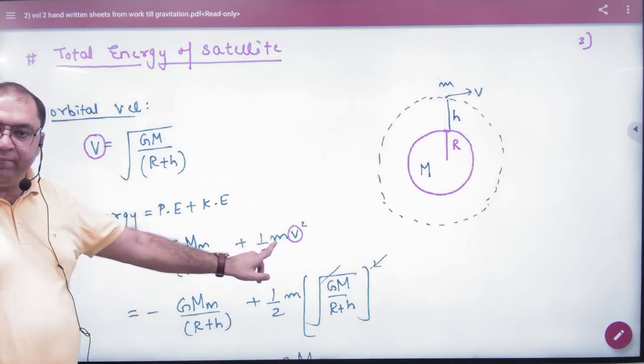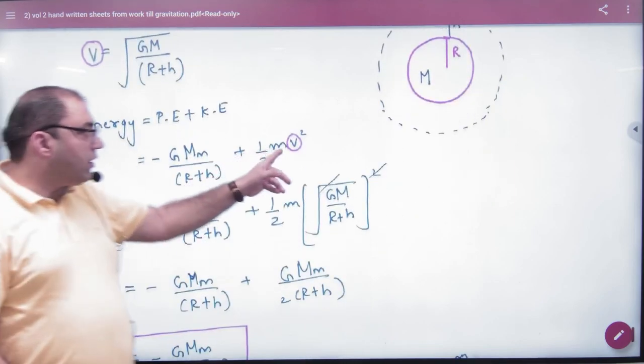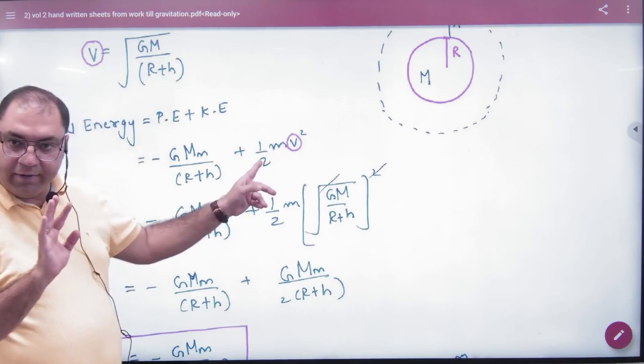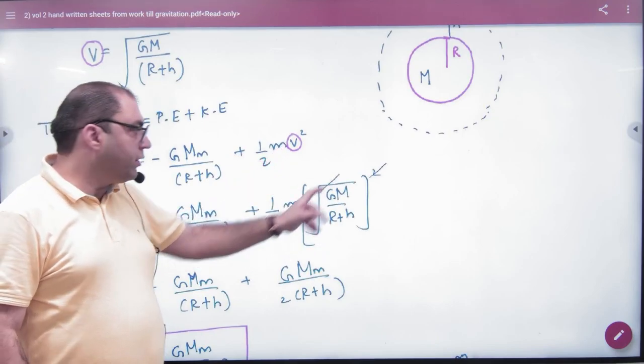What is potential? Minus GMm by r plus h. And what is kinetic? Half m v square, where m is mass of satellite. V means orbital velocity of a satellite. We have left orbital velocity formula.